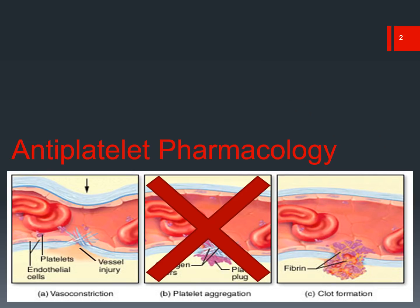Now that we've reviewed the pathophysiology of platelet plug formation through adhesion, activation, and aggregation, let us transition into the medications that can be utilized as anti-platelet medications. These would be drugs that block the platelet plug formation. All of the drugs that we're going to cover in this next section are all blocking platelet activity.